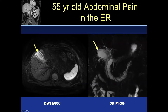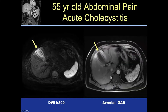MRCP was also performed, demonstrating abnormal pericholecystic fluid. The features of acute cholecystitis include restricted diffusion in the wall and surrounding pericholecystic tissues. On the arterial phase post-gadolinium, you want to see abnormal enhancement of the gallbladder wall as well as a halo of enhancement. You're not going to see every finding in all patients, but these are the findings which should convince you that you're looking at acute cholecystitis.